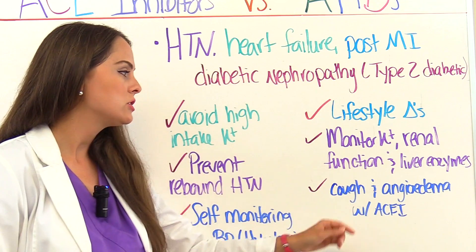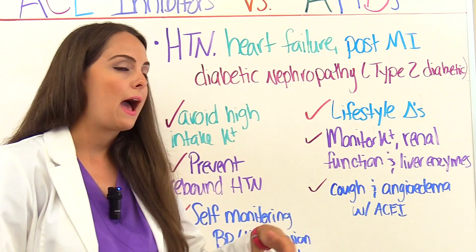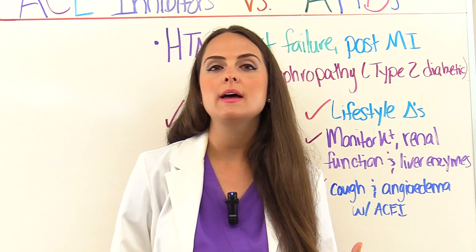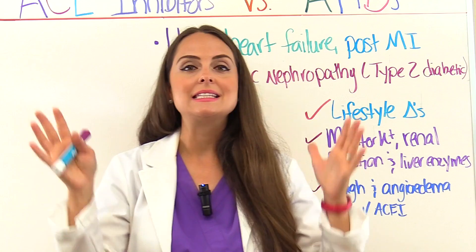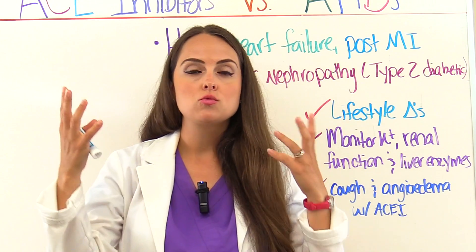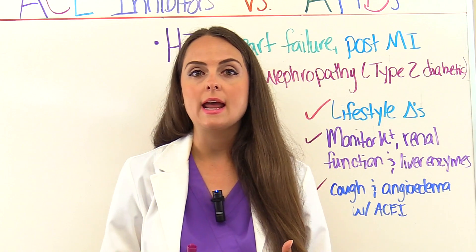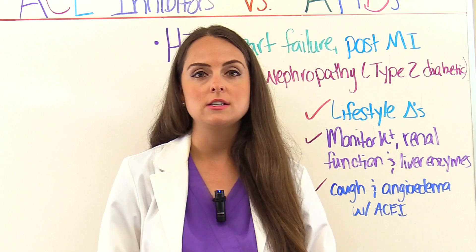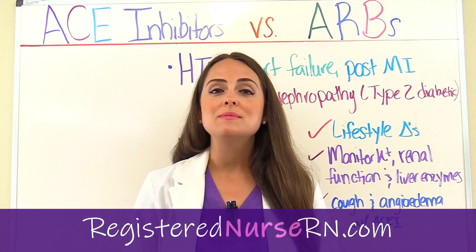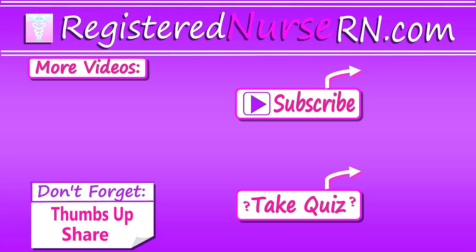Educate the patient about angioedema — swelling that's more likely with ACE inhibitors but can also happen rarely with ARBs. Educate them about swelling of the face, mouth, and lips, and difficulty breathing, and let them know it's a medical emergency and they should seek attention immediately. That wraps up this review over ACE inhibitors versus ARBs. Thank you so much for watching — don't forget to take the free quiz and subscribe to our channel for more videos.